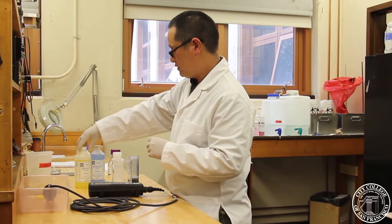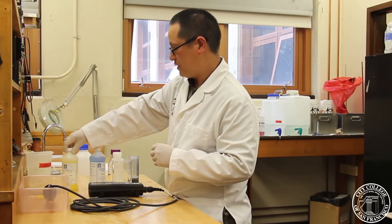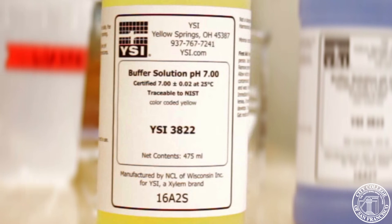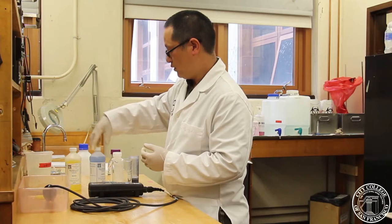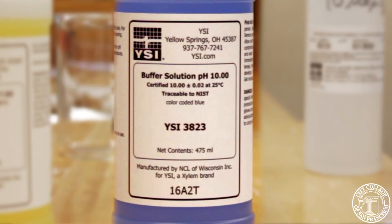And we have two standards that we're going to be testing. One is pH 7, which is in yellow, and the second one is going to be pH 10, which is blue. And so it's important to know what water you're testing, because most of the range of the water we were testing out in the field was between 6 to 8.